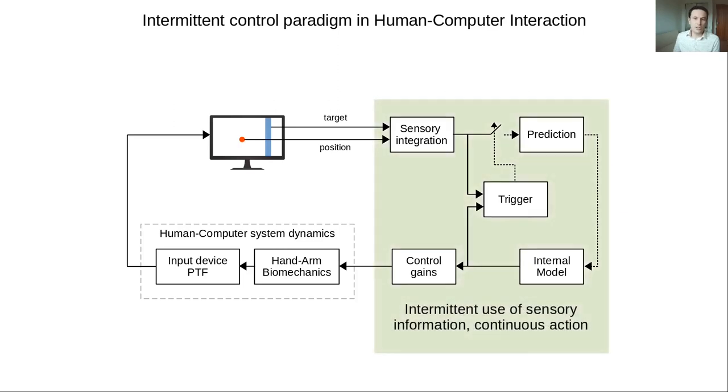In this case, the prediction and the internal model are updated with feedback information only when the trigger closes the loop.